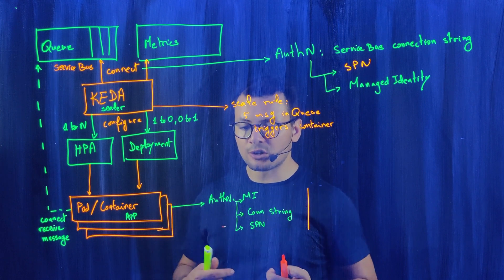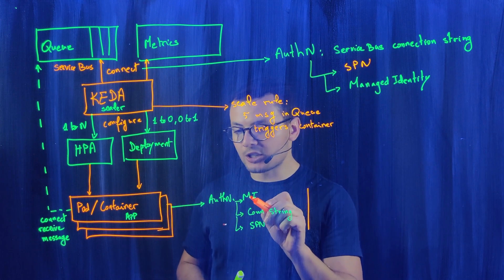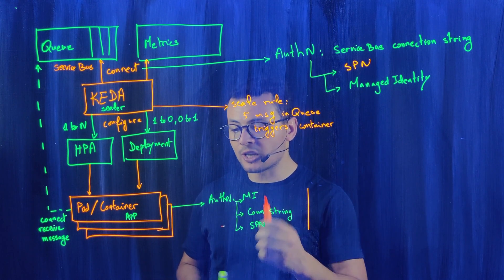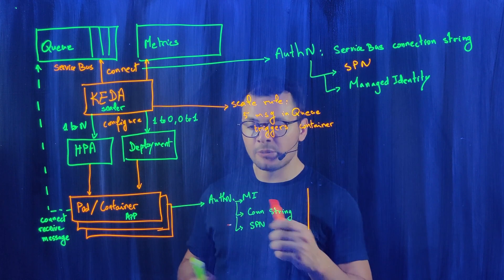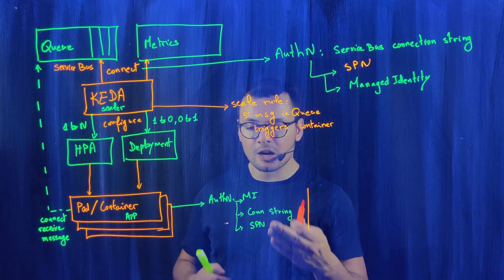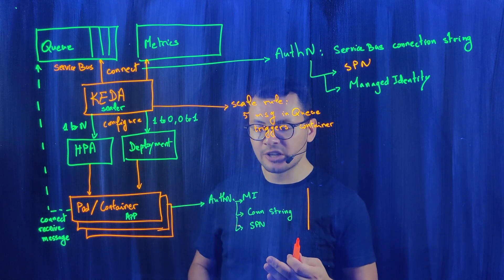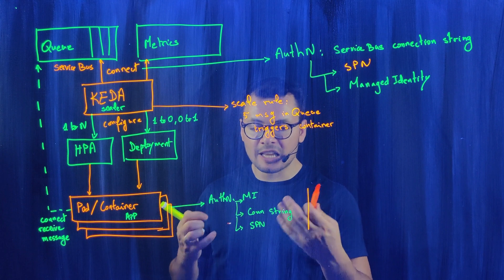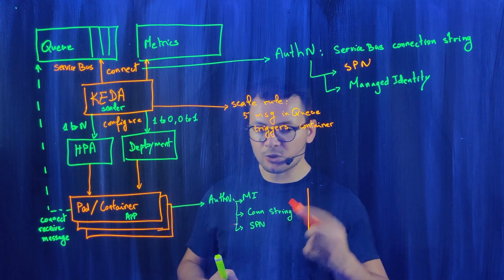And when he's on his machine, he cannot use managed identity because his machine is not an Azure virtual machine. And maybe we don't want to use a connection string or a service principal because those contain passwords and credentials. And we don't want to save those credentials onto the developer machine.